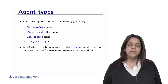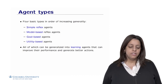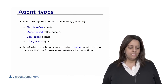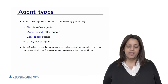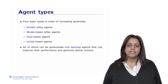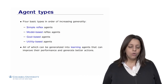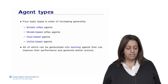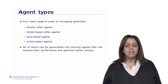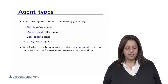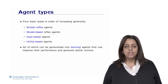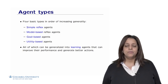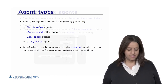There are four basic types of agents in order of increasing generality: simple reflex agents, model-based reflex agents, goal-based agents, and utility-based agents — all of which can be generalized to learning agents that can improve their performance and generate better actions.